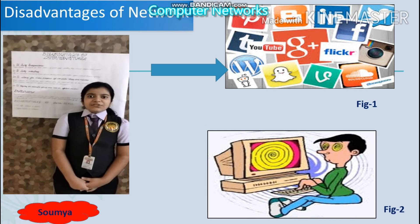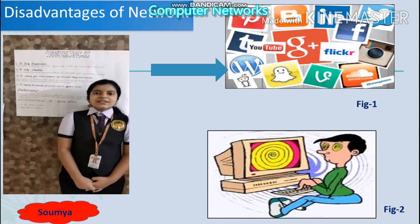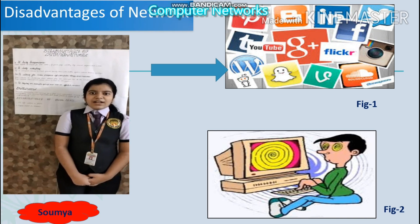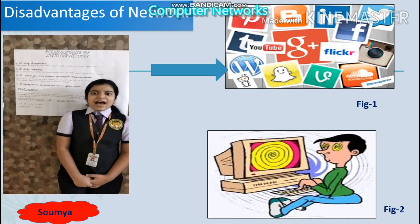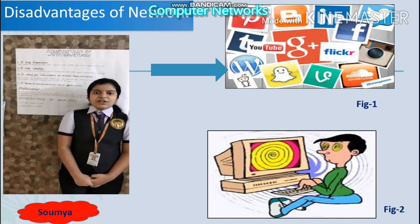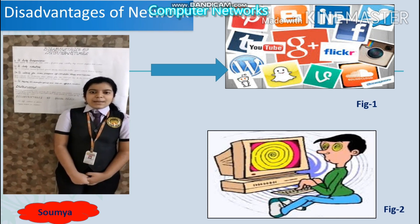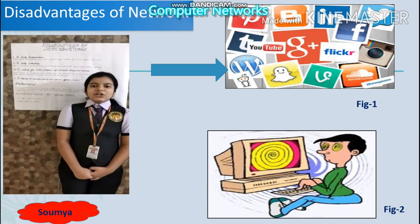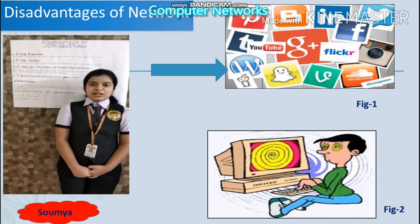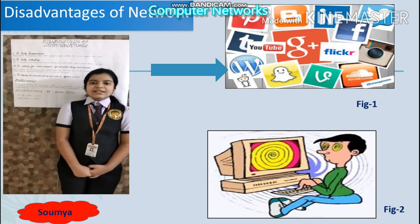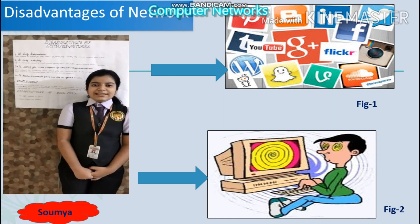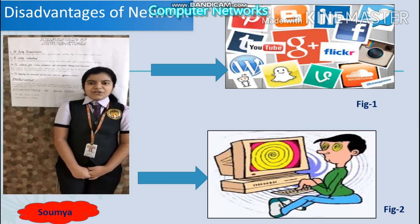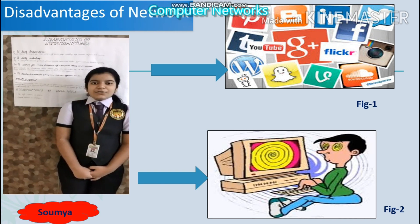By using the Internet, we can share information, ideas, apps, programs, etc. Now I am going to explain some disadvantages of social media. Number one, it has a negative impact on children's daily life. Second, social media users cannot live without social media. Figure 2 shows that people face health problems caused by overuse of computer networks. Thus, I request everyone to use computer networks in a limited way. Thank you.